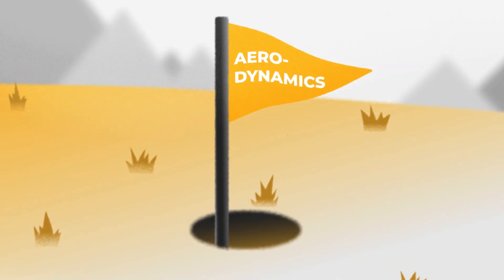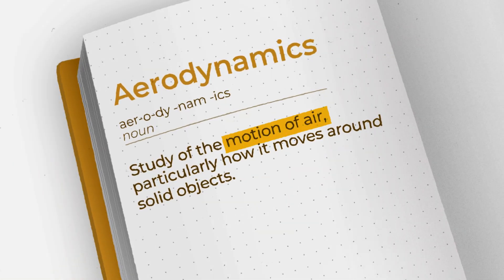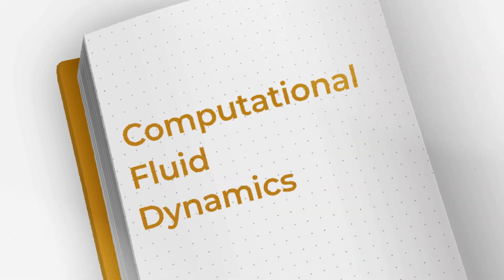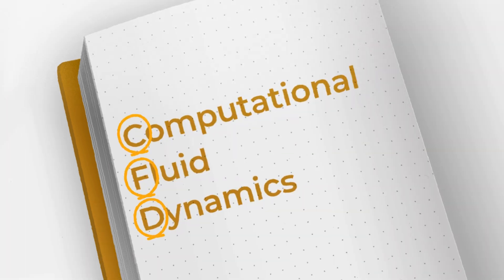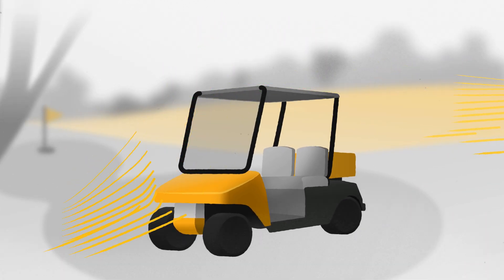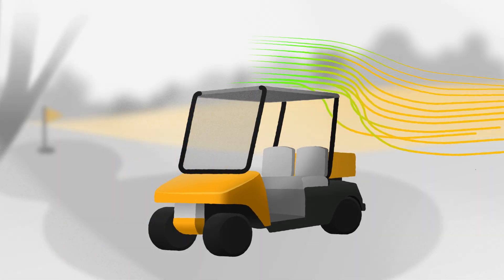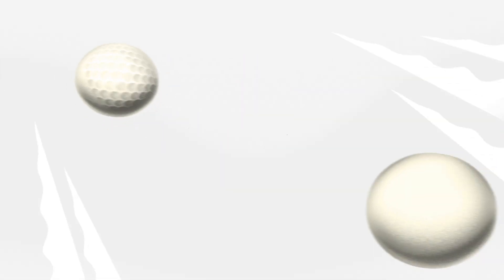Why is that, you ask? It all comes down to aerodynamics. Aerodynamics is the study of the motion of air, particularly how it moves around solid objects. Engineers use Computational Fluid Dynamics, or CFD, to determine the aerodynamic effects on different objects, such as cars. This aerodynamic phenomenon is the reason a dented golf ball flies further than a smooth one.